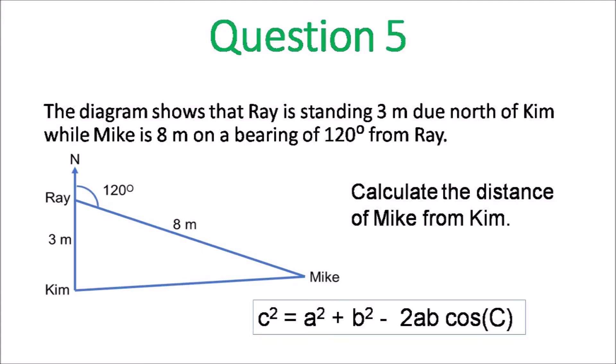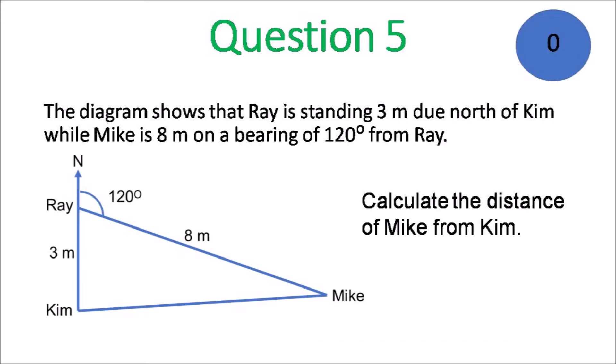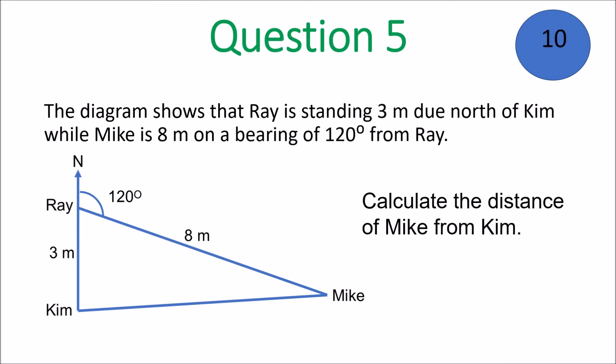We move on to question 5. You want to calculate the distance of Mike from Kim. You need to write down the cosine formula: c squared equals a squared plus b squared minus 2ab cosine of C. It will be provided on the examination paper, so you don't have to memorize these formulas — you just need to know which one to use and how to use it.